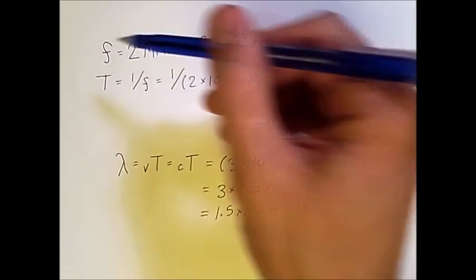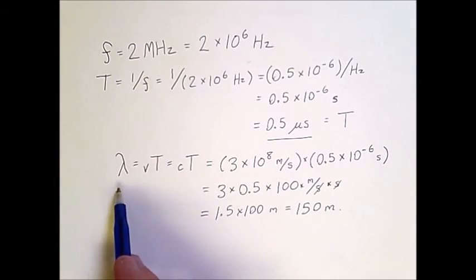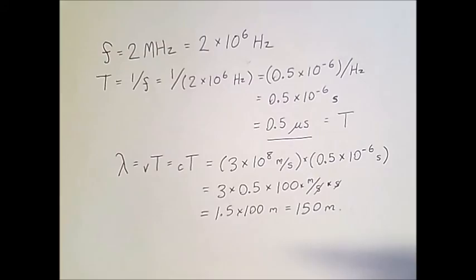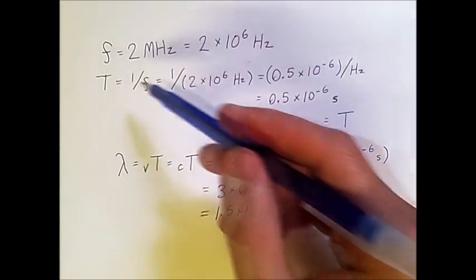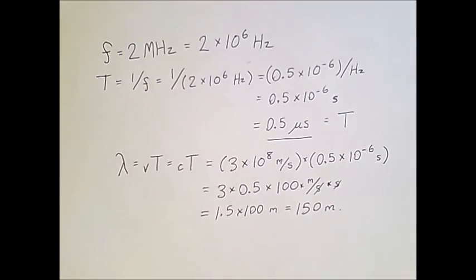So given the frequency, we can compute the period, and given the period, we can compute the wavelength, and we would also be able to reverse these calculations as needed to get any of these unknowns, given one of the values as an input. Thank you.